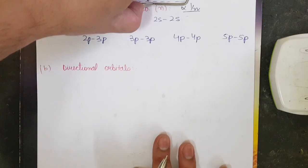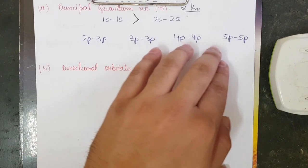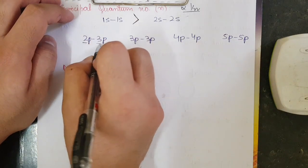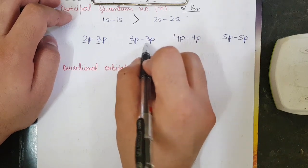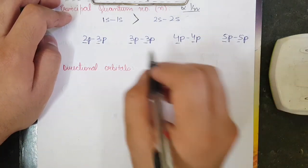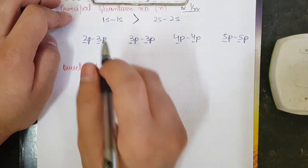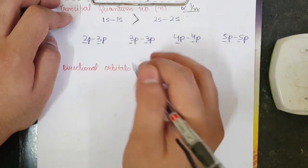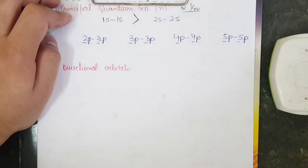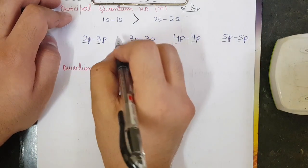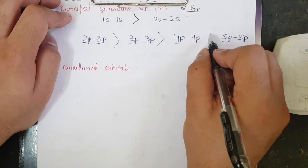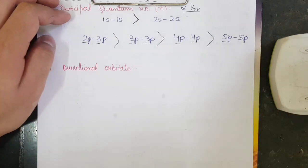Similarly, for p orbitals: 2p–2p overlap is greater than 3p–3p overlap, which is greater than 4p–4p, which is greater than 5p–5p overlap. This is because as the principal quantum number increases, the size of the orbital increases, reducing the extent of overlap.